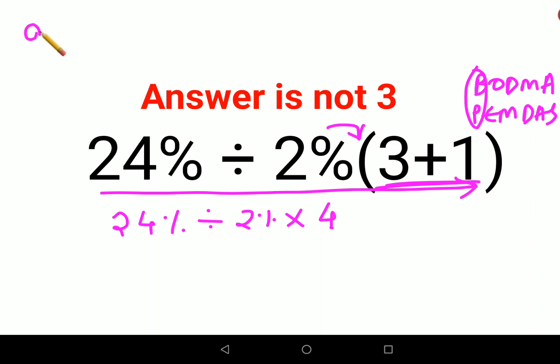Now understand whenever you have a question which has a number which has a percentage sign ahead of it, you can convert it into a fraction by dividing it by 100. So this can be written as 24 upon 100.